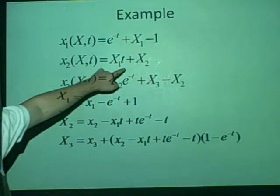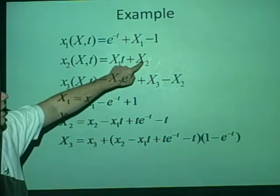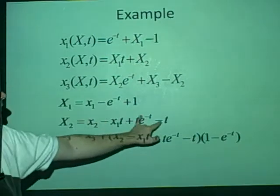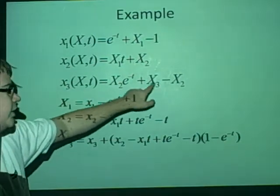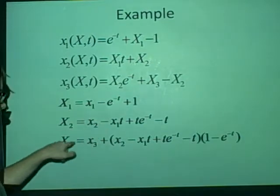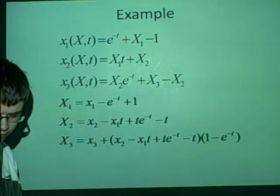That gives us X1 over here, then we can now substitute this X1 into here, and then rearrange to get X2, which gives us here. And then we've now got X1 and X2, so we can put those into here, and then rearrange to get the X3, so this one gets a bit messier. I hope that's made sense so far.